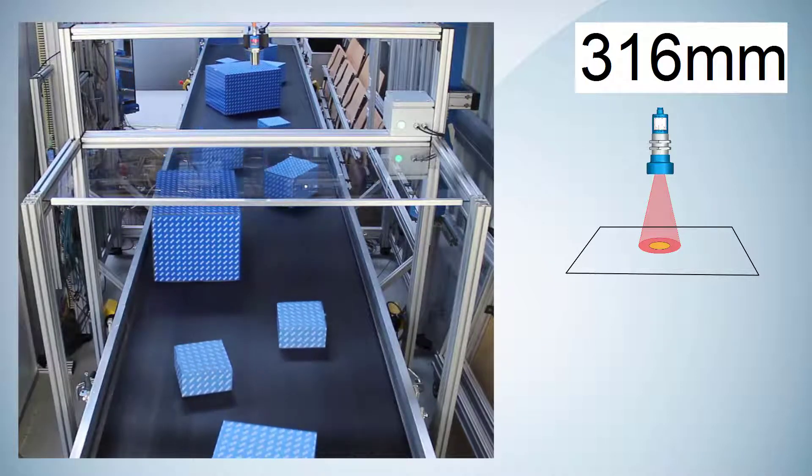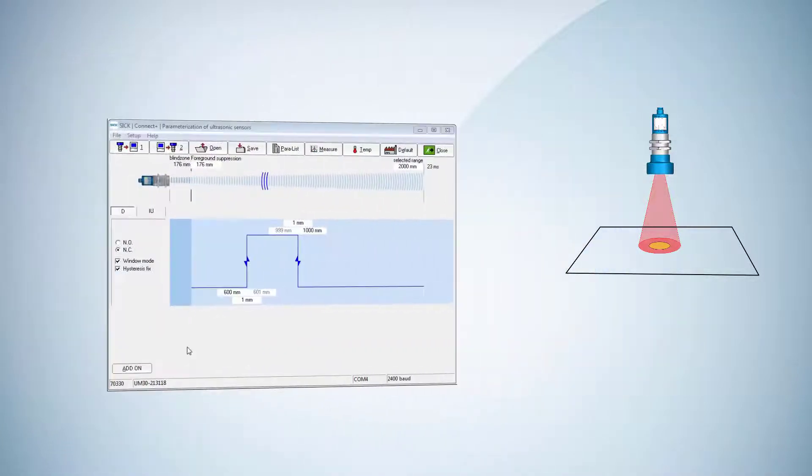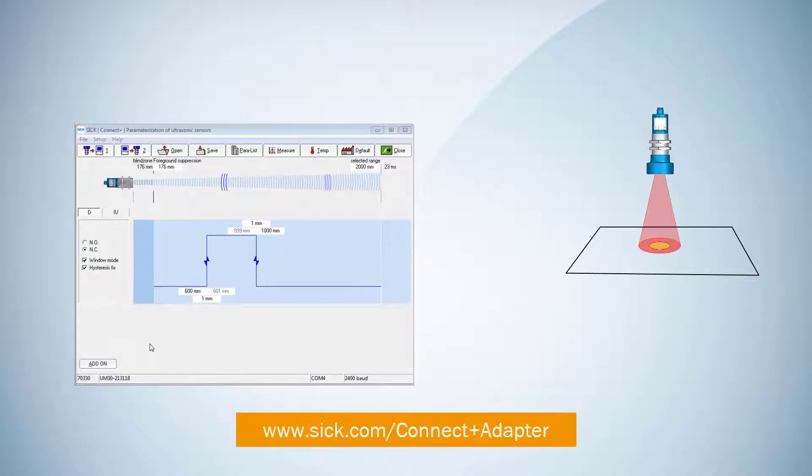In order to measure through the hole in the acrylic glass, we must reduce the width of the sound cone. This can be done with the ultrasonic sensor software Connect Plus.